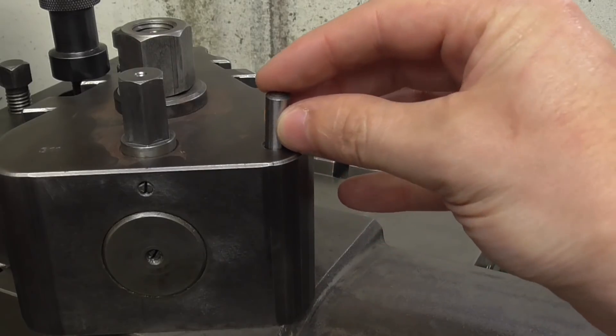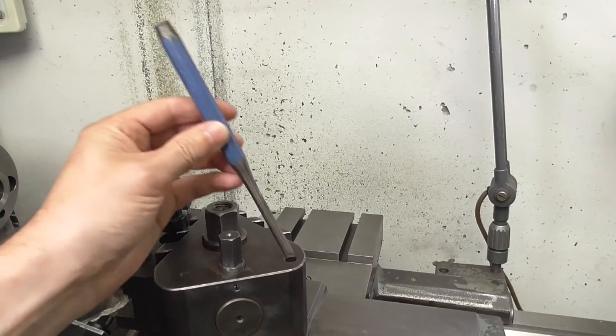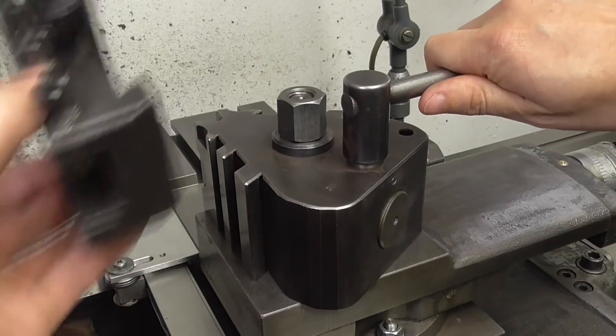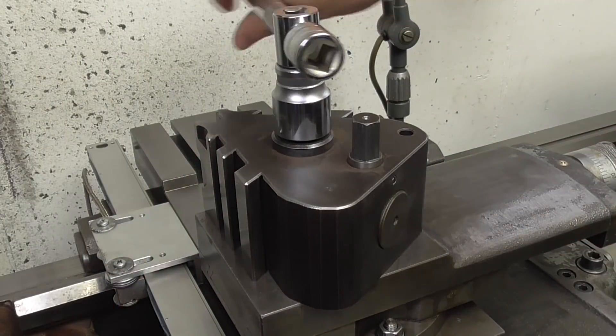Now I can mark the exact position of this hole on the top slide with my custom center punch. Disassemble everything so I can drill the hole over on the drill press.